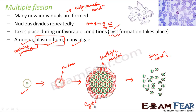Multiple fission is a type of reproduction that happens only during unfavorable conditions. Some organisms reproduce by binary fission during favorable conditions and by multiple fission during unfavorable conditions. For example, in amoeba both binary fission and multiple fission take place. In all cases, each of the daughter cells produced is identical to the parent cell.